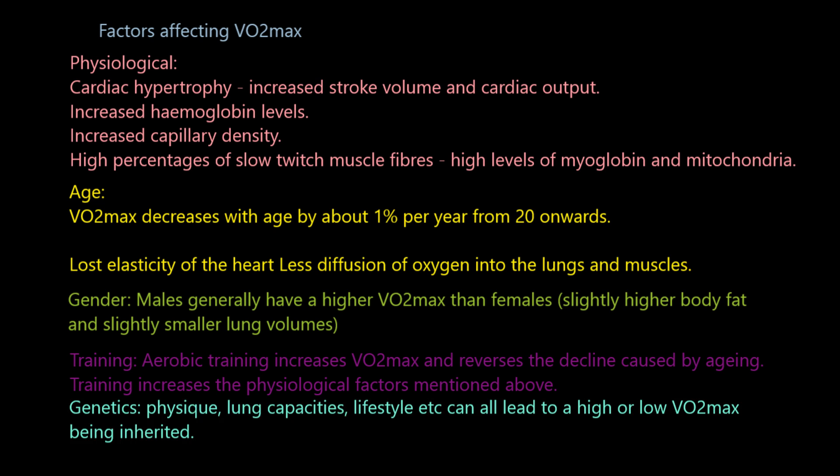Finally, genetics is also a factor that can affect VO2max. Certain physical traits and characteristics can be inherited from your parents that can either increase or decrease your VO2max. For example, it's not just the fact that certain runners are born at high altitude that makes them great distance runners — their physiques, being very tall and very lean, are also inherited. Being tall and lean gives a very long stride length, allowing you to cover long distances quicker than rivals. So you can inherit a high or low VO2max, and genetics is another factor that can ultimately affect it.